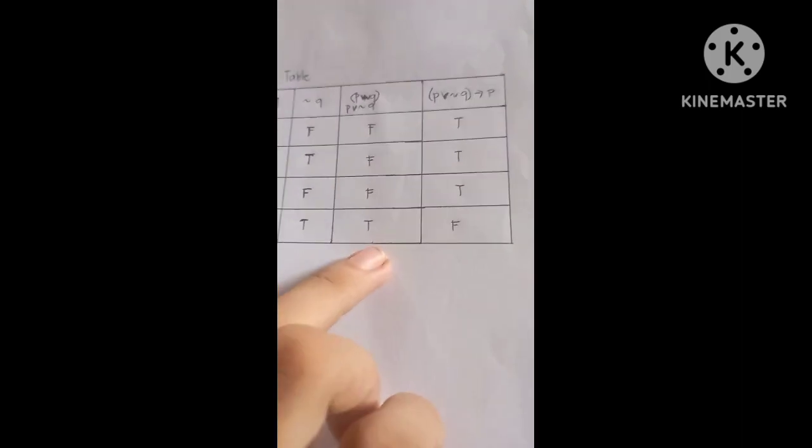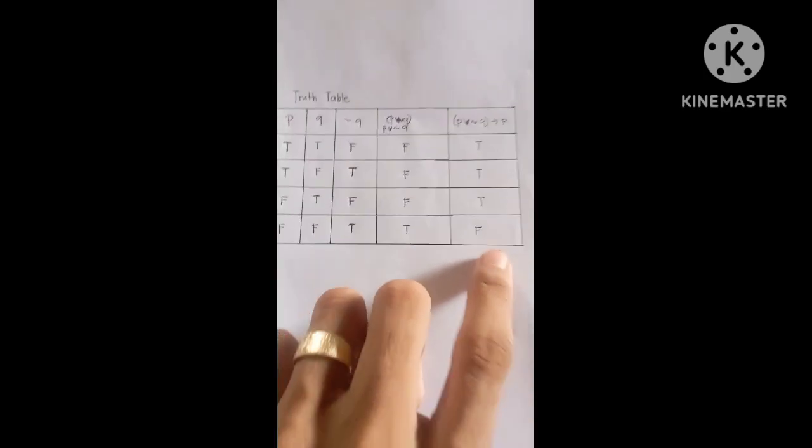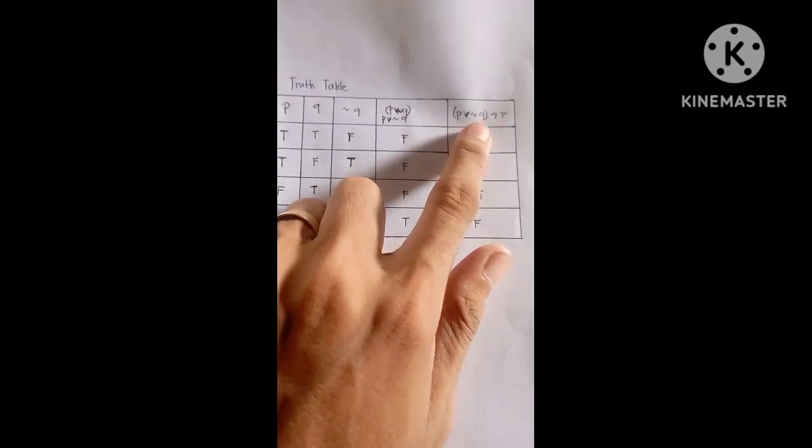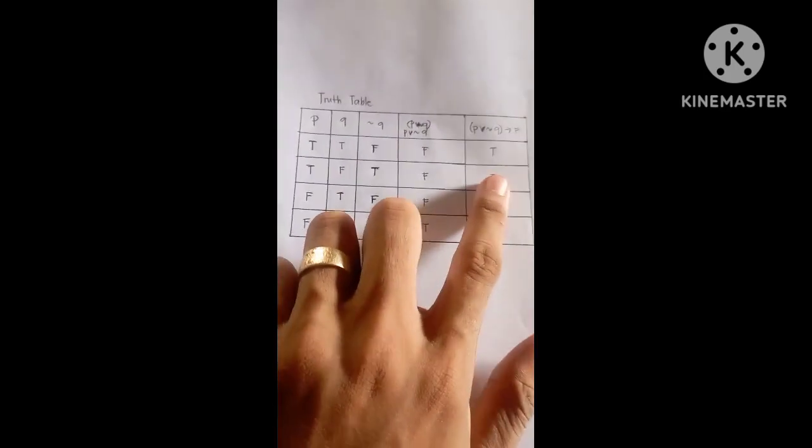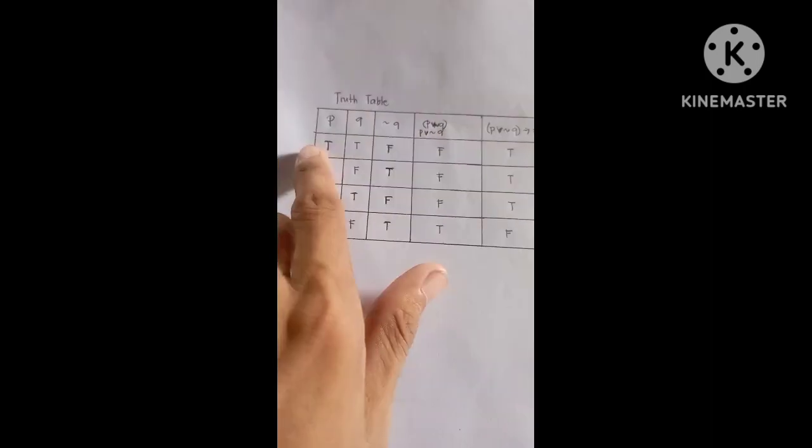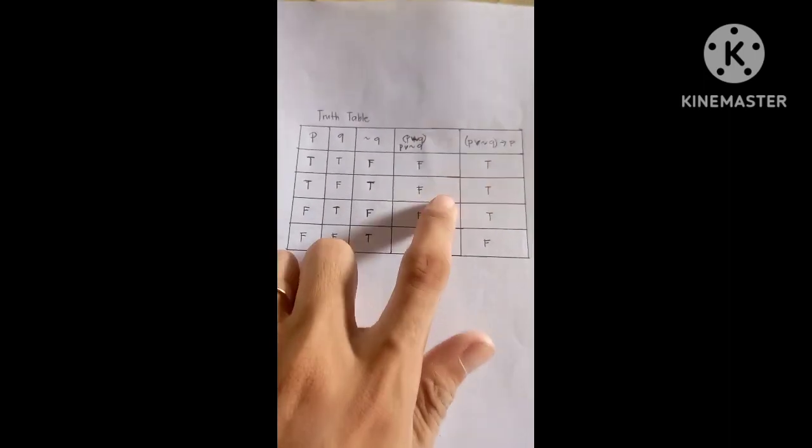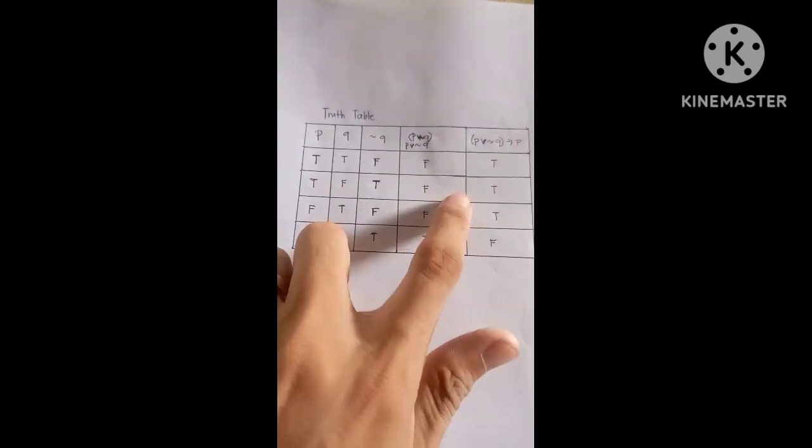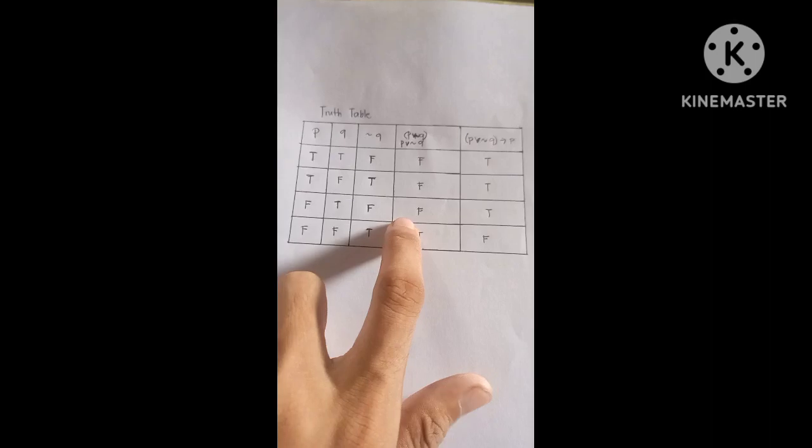And then for the last column, P V not Q to P, so it is true. It is true. True and false, it is true. And then same, true, false, true. And then false, false, it is true.